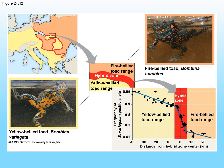Here's a map of Europe showing an example hybrid zone. The dark red line represents the hybrid zone. The yellow area represents the habitat of the yellow-belly toad, and the orange area represents where the fire-belly toad is found in higher frequency. Where they meet and produce offspring is the hybrid zone — this is an example of a hybrid zone maintained over a very long period of time.